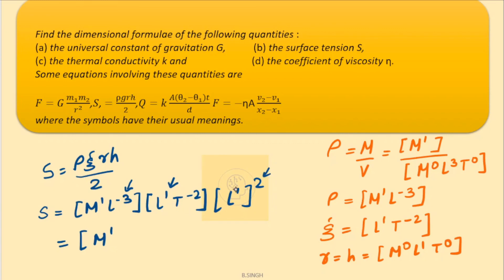So 2 plus 1 is 3, and minus 3 that will be 0. And finally T to the power minus 2. So this is the dimensions of surface tension: M1 L0 T minus 2.